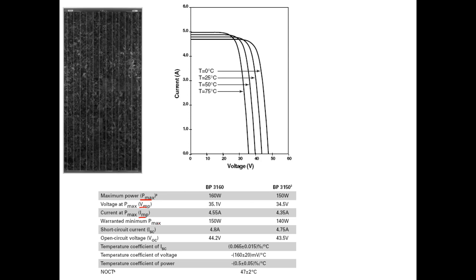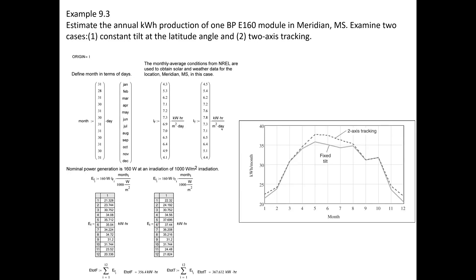It's asking to examine two cases. One where you have a constant tilt angle, and then another one that has a two-axes rotation. I just want to kind of illustrate the difference between the two.